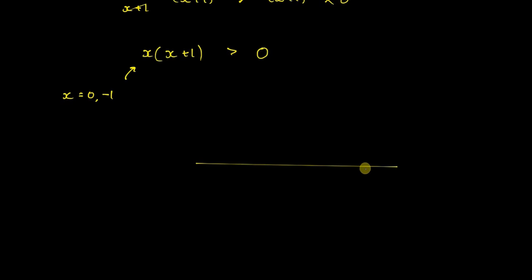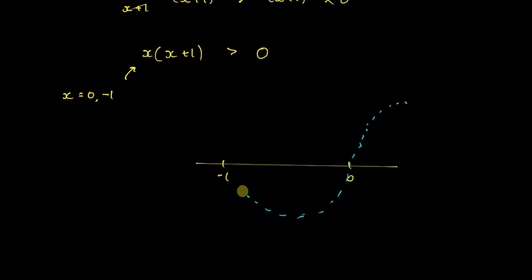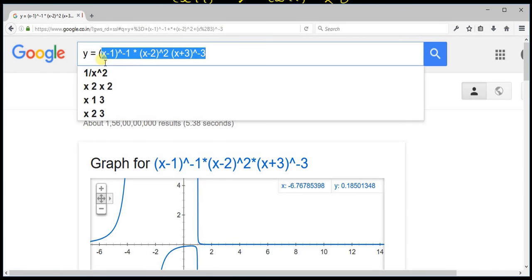Plot 0 and minus 1 on the number line. Start from the top right corner. All powers here are odd (power of 1), so the curve crosses every point. We want the expression greater than 0 — above the axis — so x belongs to (minus infinity, minus 1) union (0, infinity).